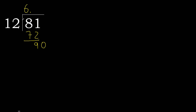12 multiply by 8 is 96, which is greater. Multiply by 7 — 84 is not greater. Subtract: 90 minus 84 equals 6.